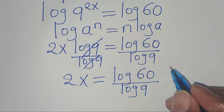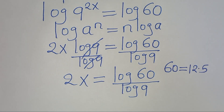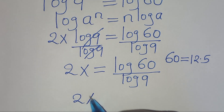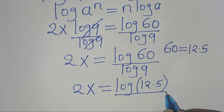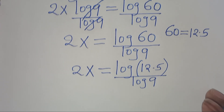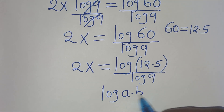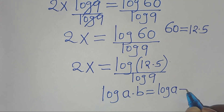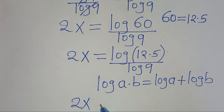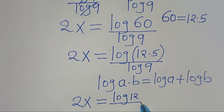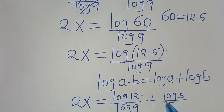The next step: we can express 60 as 12 multiplied by 5. Substituting this, then we have 2x equal to log(12 × 5) divided by log 9. Now log(12 × 5) is in the form of log(a × b), which can be expressed as log a plus log b. Applying this logarithm property, we have 2x equal to log 12 divided by log 9, then plus log 5 divided by log 9.